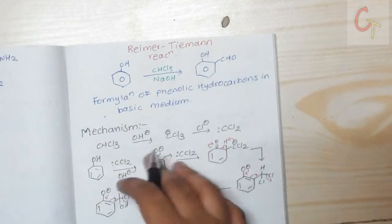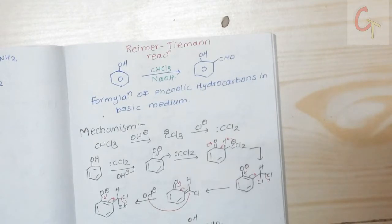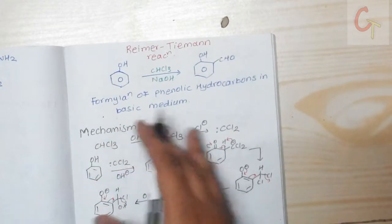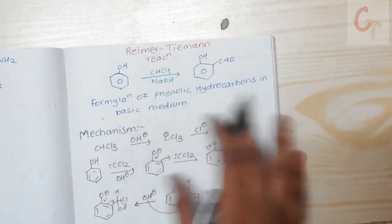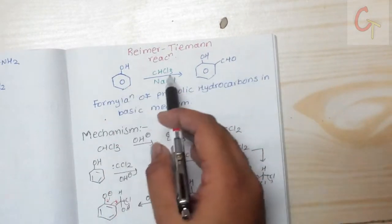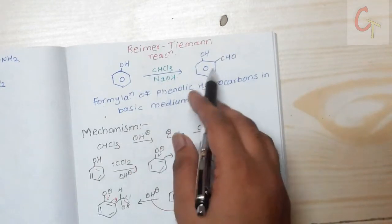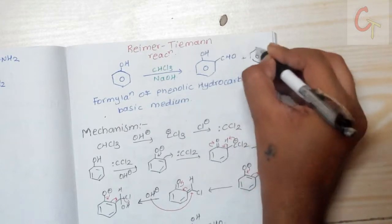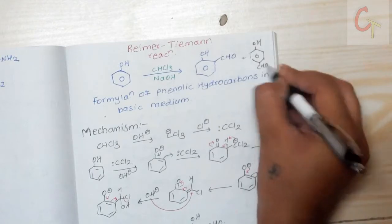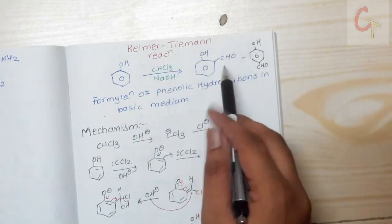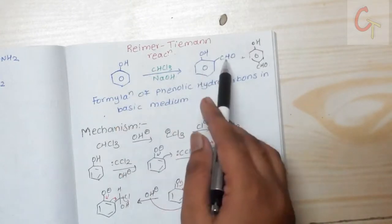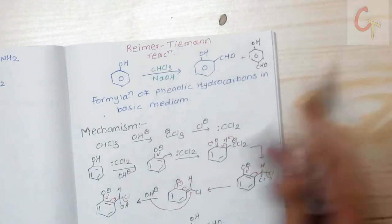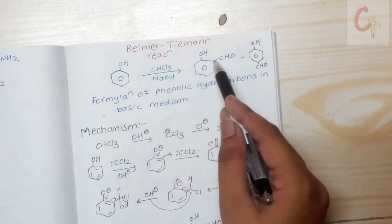Hello friends, today we are going to see the Reimer-Tiemann reaction. This is a formulation of phenolic hydrocarbon in basic medium. When phenol is treated with chloroform in basic medium, we get formylation — that is, addition of an aldehyde group — at the ortho and para positions.